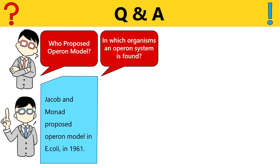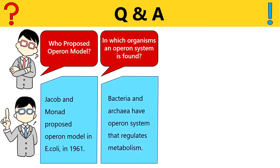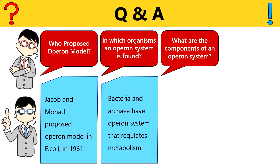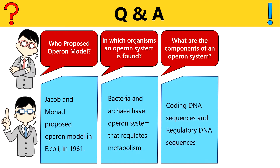The next question is which organisms have the operon system? The answer is that the operon system is common in prokaryotic organisms, mainly bacteria and some archaea. But certain species of nematodes and fruit flies also have an operon system. After that, the question is what are the components of an operon system? The answer is that the combination of closely related structural genes or the coding DNA sequences plus the regulatory DNA sequences in the promoter and operator regions form the operon system.